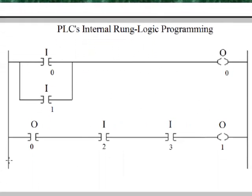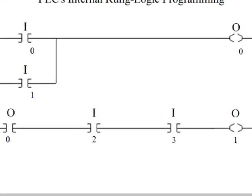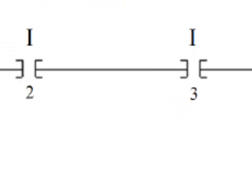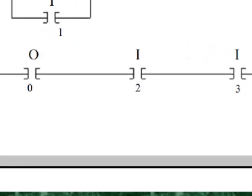When output 0 becomes true, it activates this contact — remember it's imaginary, but the program sees it as a contact — and that will activate this rung only if input 2 and input 3 are active as well. So basically, with this circuit, if either or both input 0 and input 1 are true, and input 2 and input 3 are both true, that is the only time that output 1 will be true.